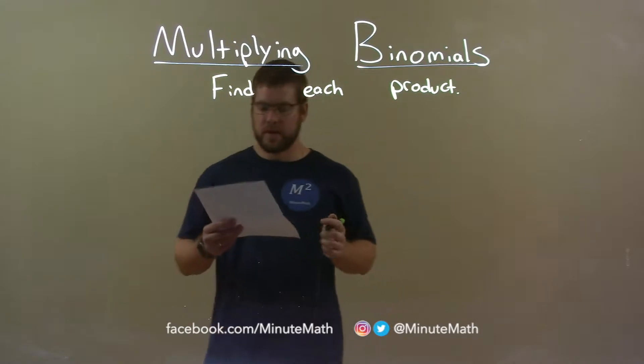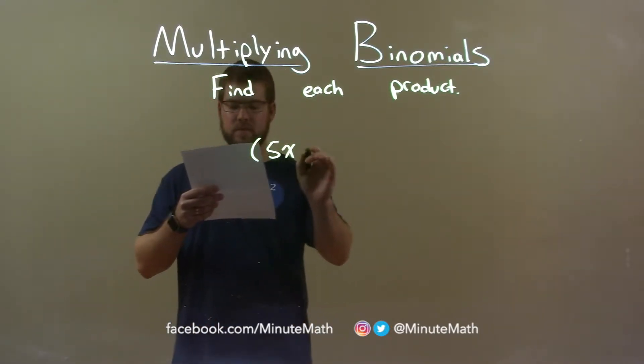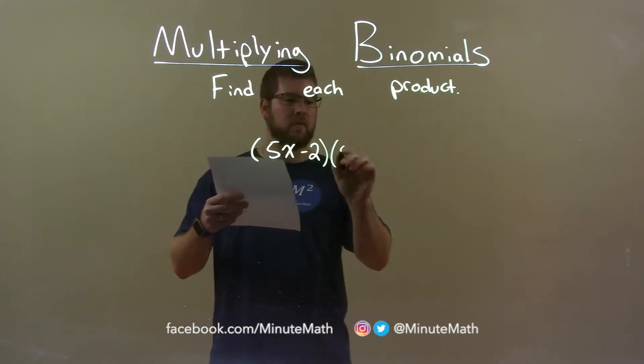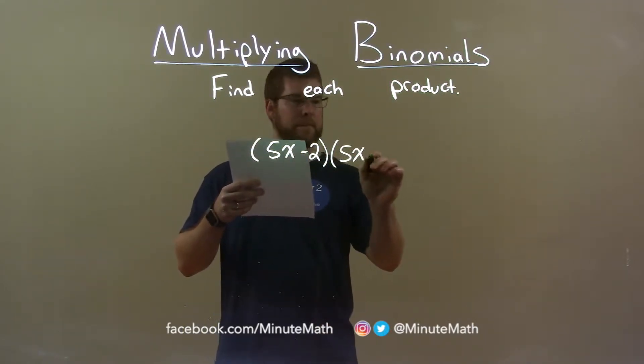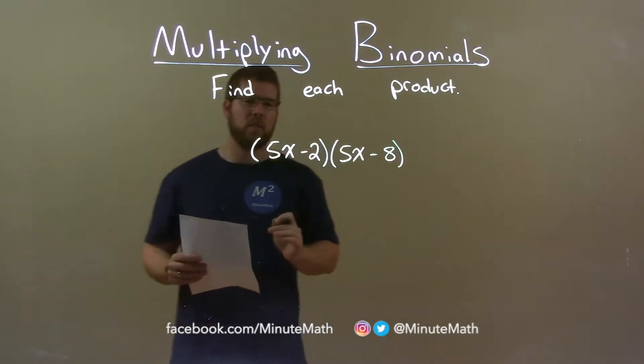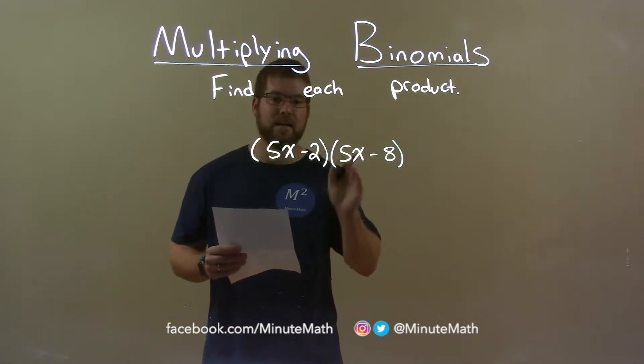If I was given this product, 5x minus 2 times 5x minus 8, we want to take all parts of our first parenthesis and multiply it by all parts of our second parenthesis.